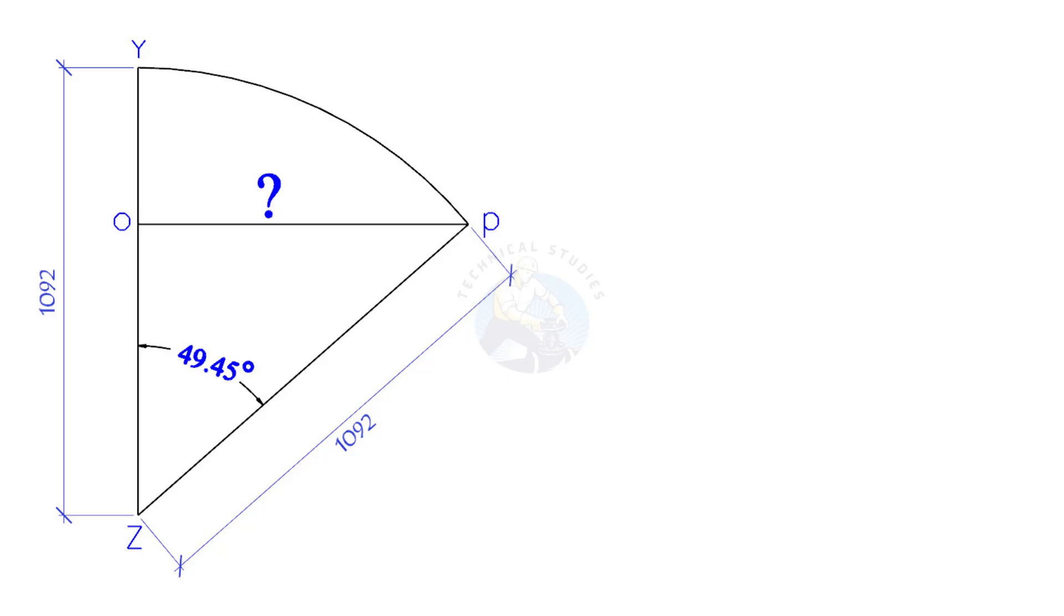The sine rule states that sine theta is equal to opposite side divided by hypotenuse. Here, sine theta equals 98.9 degrees divided by 2, is equal to 49.45 degrees.